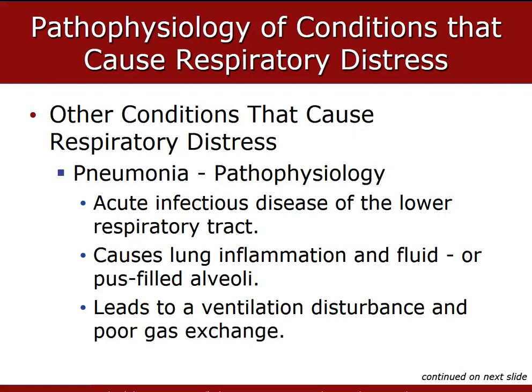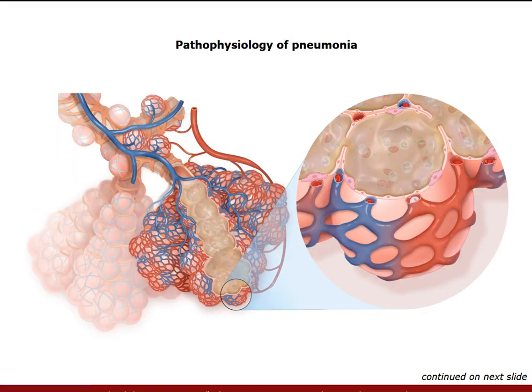Let's talk about pneumonia. We're going to talk about some other conditions that can cause respiratory distress. Pneumonia is an acute infection of the lower respiratory tract that causes lung inflammation and fluid to build up, or pus-filled alveoli from the infection. This leads to an extreme ventilation disturbance as well as poor gas exchange.